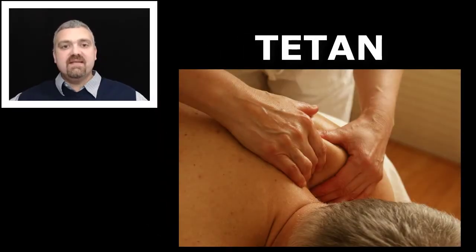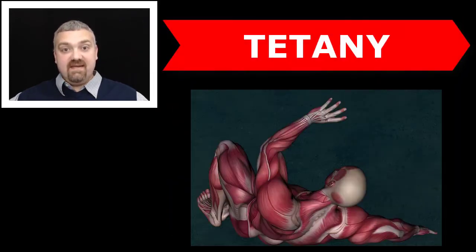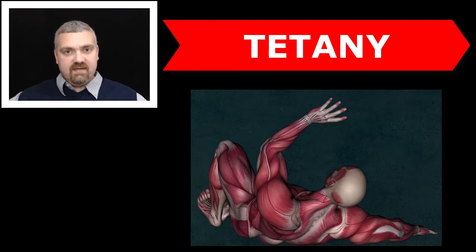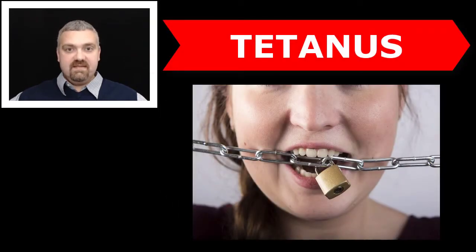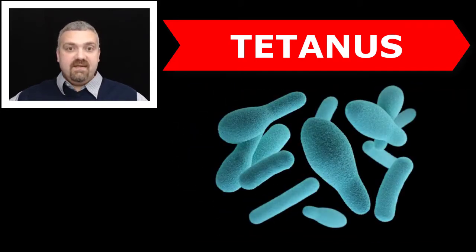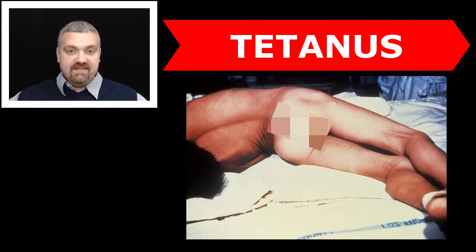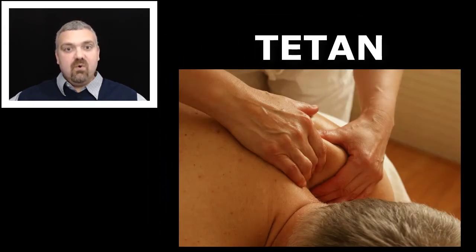Next we have tetan, which means stiff. Think tetany — tetany seizures are involuntary muscle spasms usually caused by an electrolyte imbalance, typically a calcium imbalance often caused by something wrong with your parathyroid gland. So tetany means involuntary muscle stiffening. Then we have tetanus, or lockjaw — an infectious disease caused by the toxin produced by the bacteria Clostridium tetani. It causes violent muscle contractions so powerful they can break your bones, and is fatal without treatment.